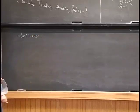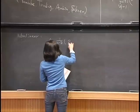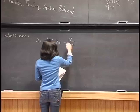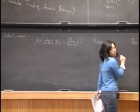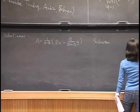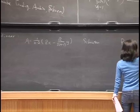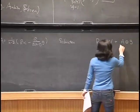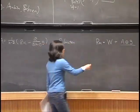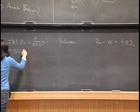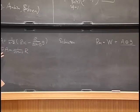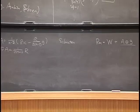Let me introduce a tensor called the Schouten tensor, which is a combination of the scalar curvature and the Ricci curvature. This tensor comes from the curvature decomposition: if you write the Riemann curvature tensor into its trace and traceless parts, the traceless part is the Weyl tensor, and the trace part can be written as a product of the Schouten tensor and the metric. If you take the trace of the Schouten tensor, it gives you a multiple of the scalar curvature, so the Yamabe problem can be viewed as studying the trace of the Schouten tensor.